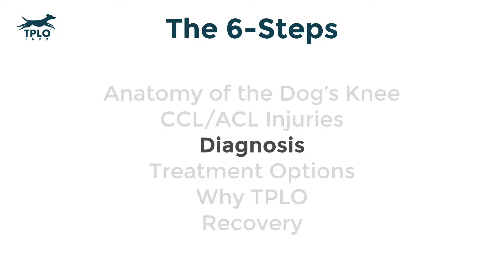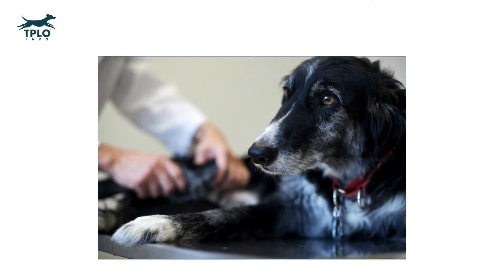Step three: how do we diagnose an ACL injury in the dog? There are several ways. First, we'll talk about how to diagnose it on direct physical examination, followed by how to diagnose it using x-rays, and lastly, what are some other signs or indicators to figure out whether a dog has either an early partial ACL injury or a complete ACL injury.